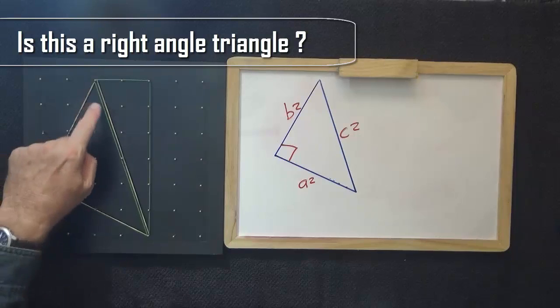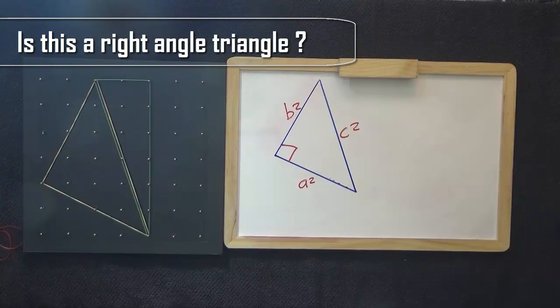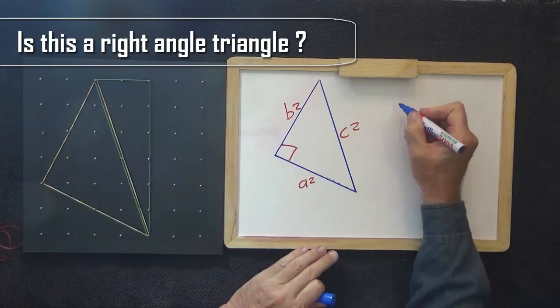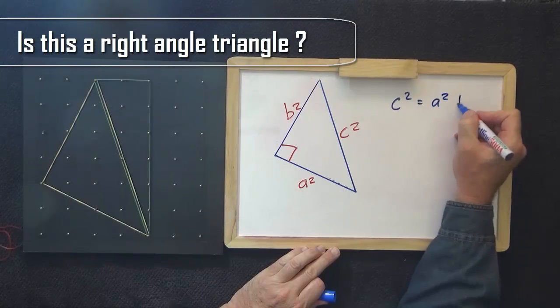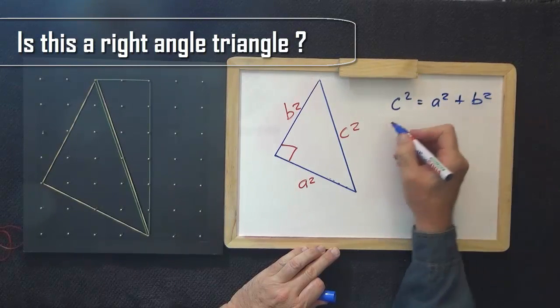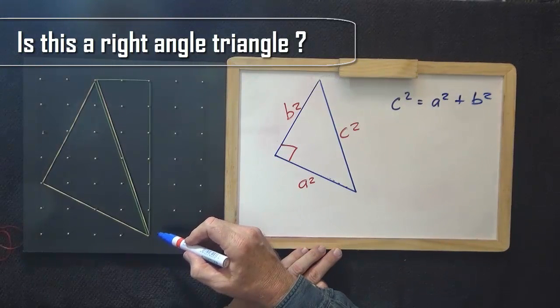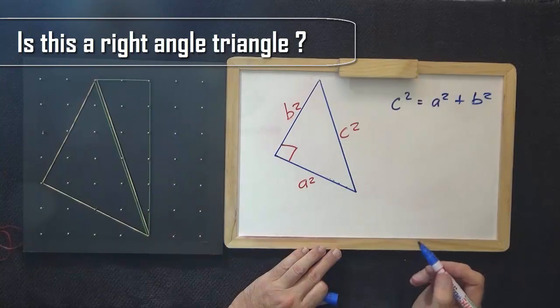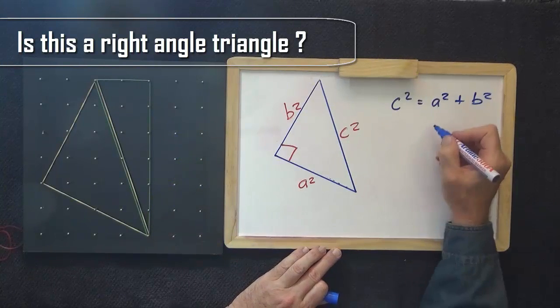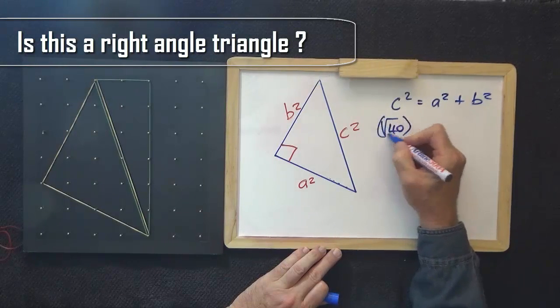Now, the green, this is now the hypotenuse of that triangle. c² = a² + b². And in this case, c, the longest side, is 6, 36, the square root of 36 plus 4 is root 40 squared.